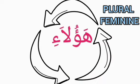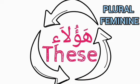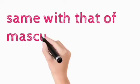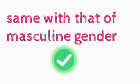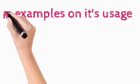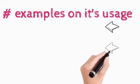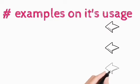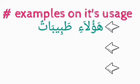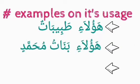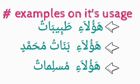For the plural form of hazihi, we have haulai, which is similar to that of haza. That is to say, both the masculine and the feminine gender share the same plural form. Examples using haulai for the feminine: haulai tabibatun — these are female doctors; haulai banatu muhammadin — these are the daughters of Muhammad; haulai muslimatun — these are Muslims.